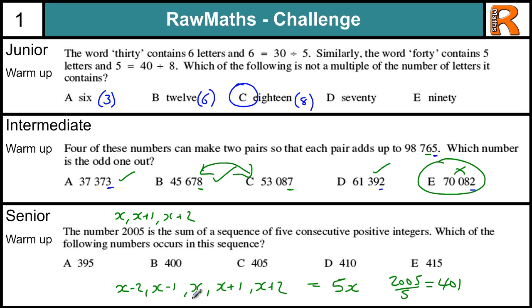So our middle number is 401. This number is 400, this is 399. And we clearly have the answer B as 400.